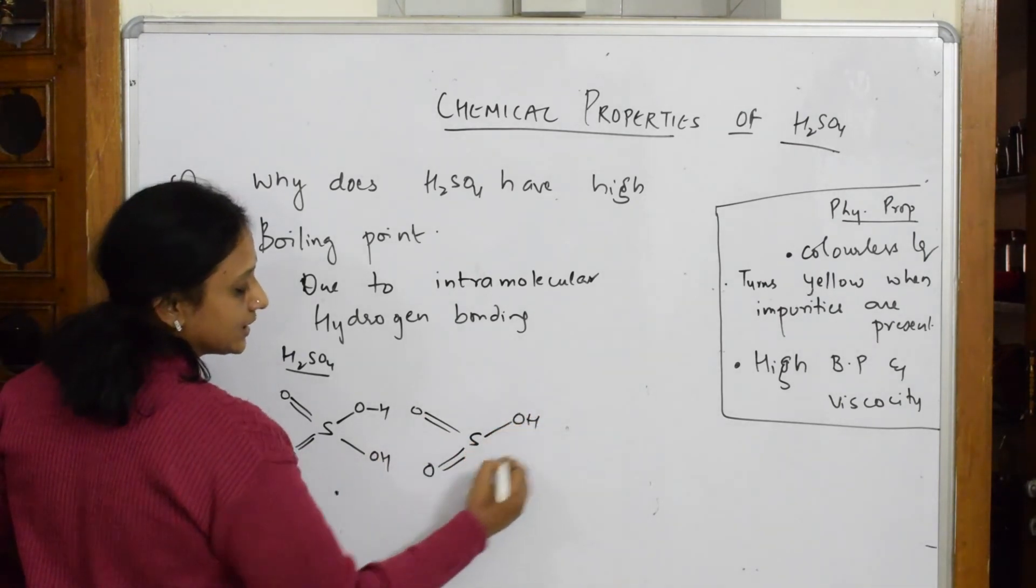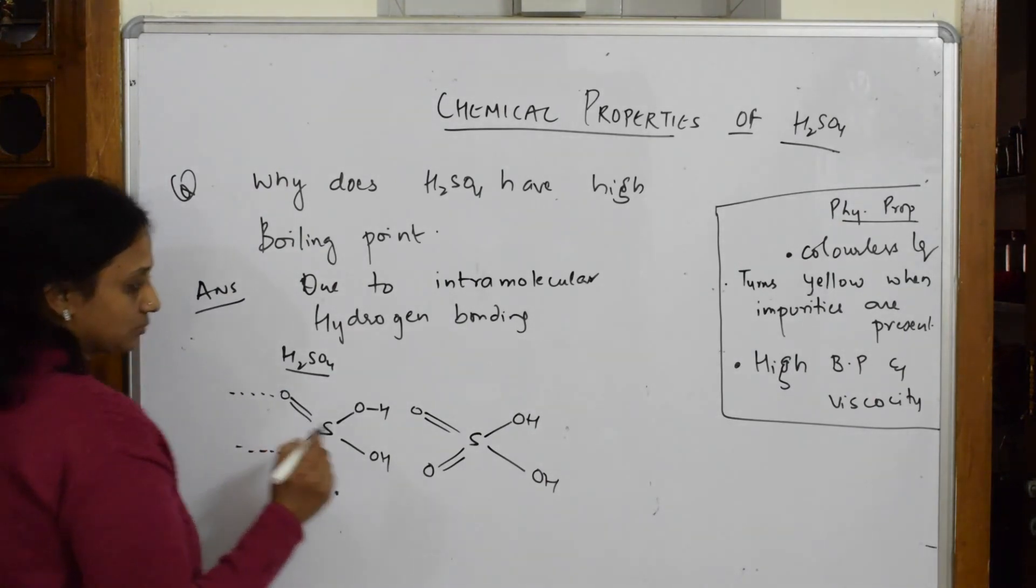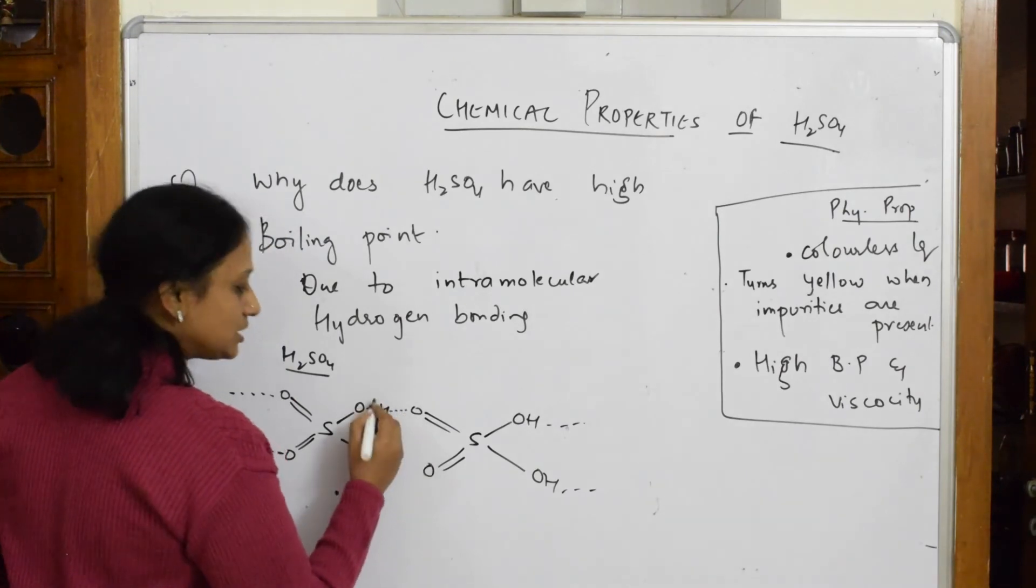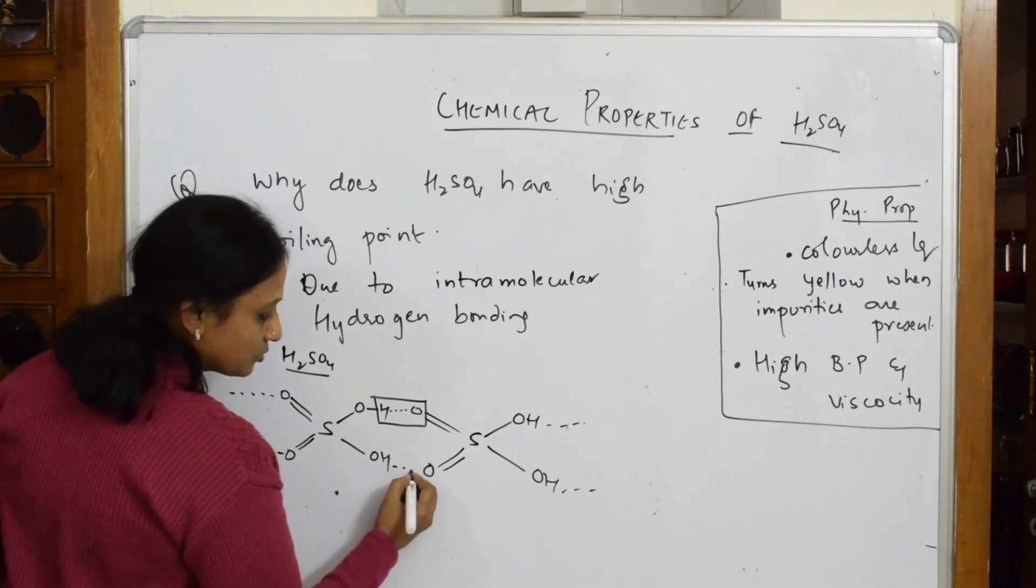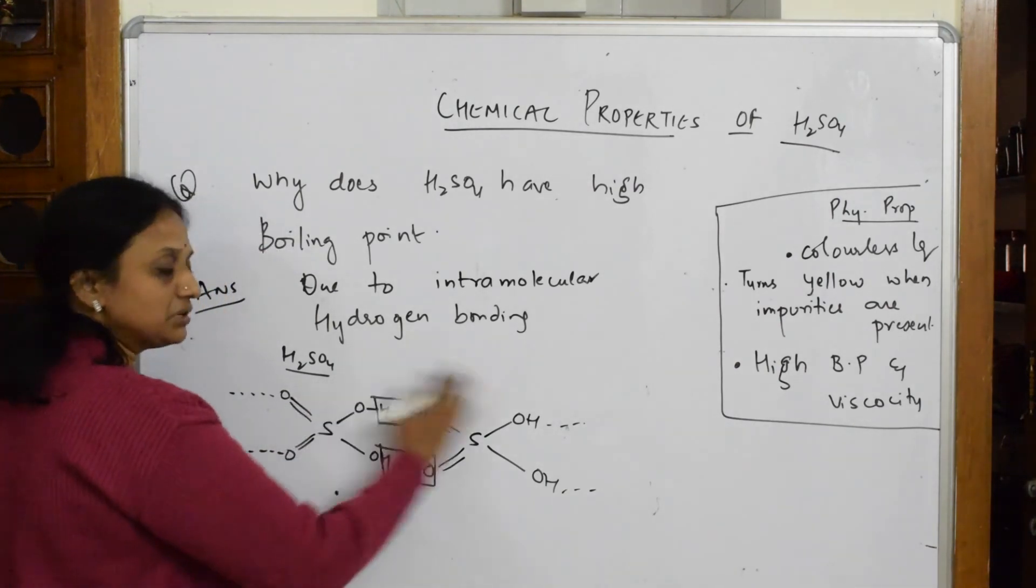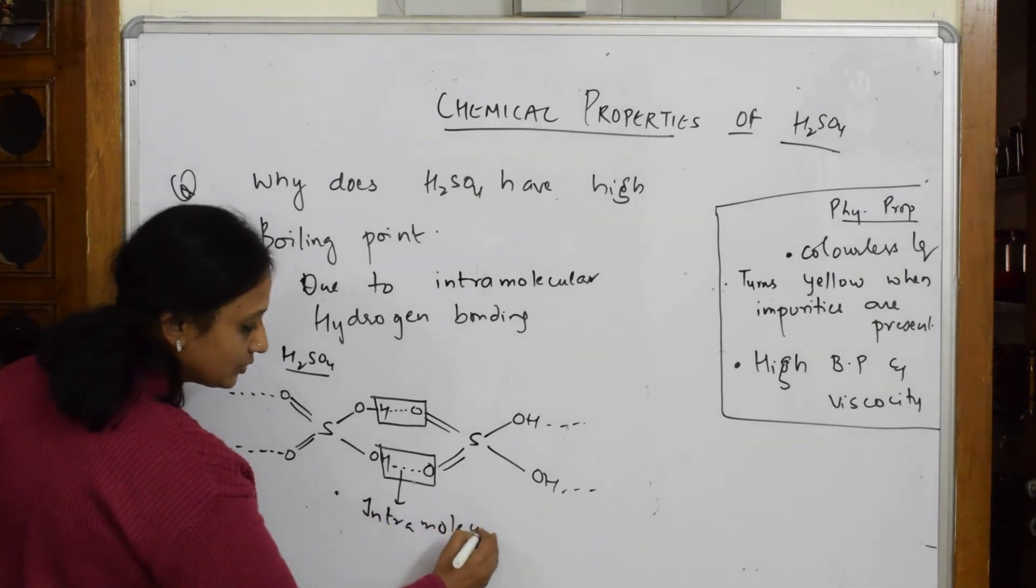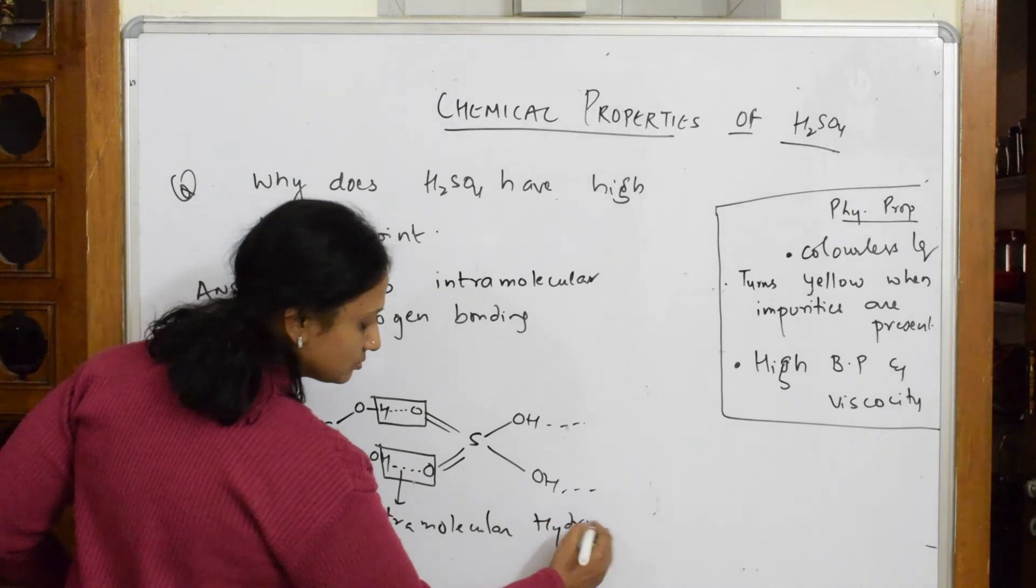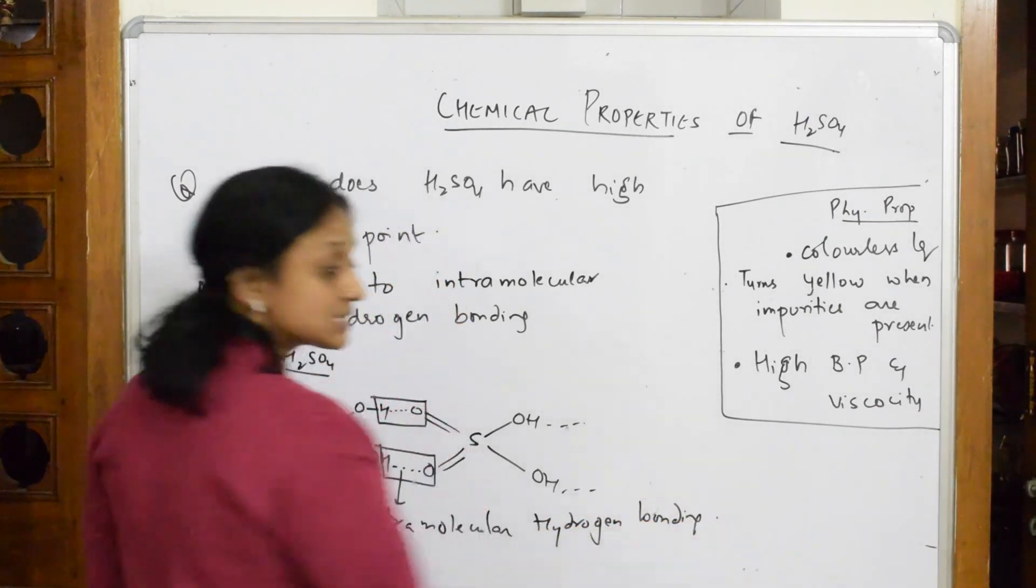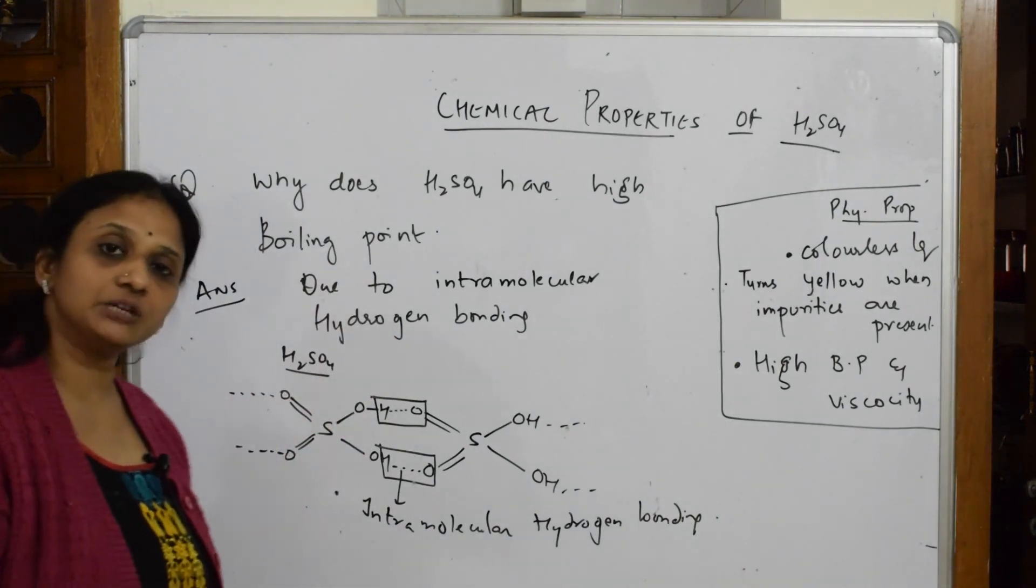Now this is going to form intramolecular hydrogen bonding. This also forms intramolecular. There is a hydrogen bond formed between these two. Just see here, there is again hydrogen bond formed between the oxygen and hydrogen. So this is between similar molecules. That's why we call it intramolecular hydrogen bonding. That's it. This is the reason: because of the presence of intramolecular hydrogen bonding strong enough, hence they have higher boiling point.